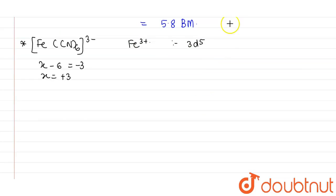We need to calculate the number of unpaired electrons. There are 5 electrons in 3d orbital. This CN minus ligand is a strong field ligand. As this is a strong field ligand, it will initiate pairing.